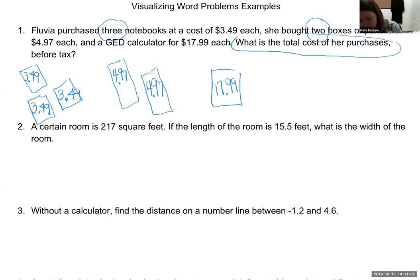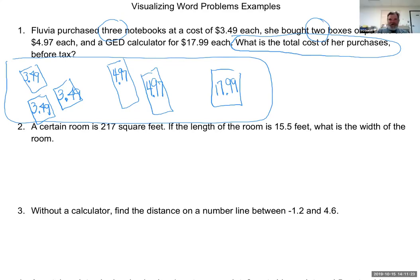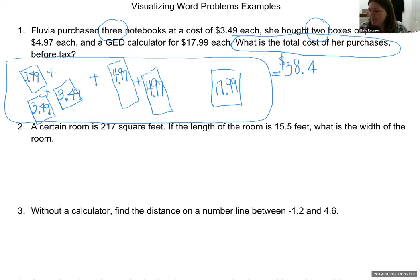Richard says to add them all together — or you could multiply. I could do repeated addition or multiplication. I'll add all my $3.49s, my two $4.97s, and my $17.99. I got this out of my calculator: $38.4. If I want money to make sense, I use two decimal places, so that becomes $38.40.